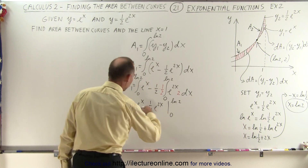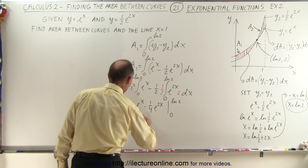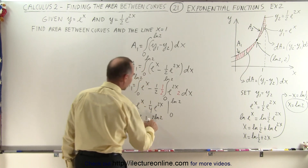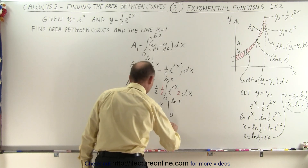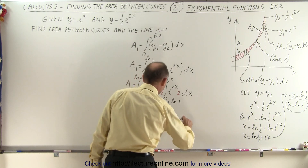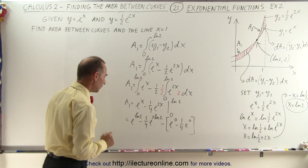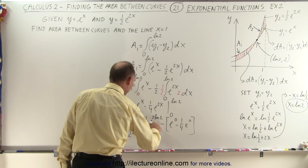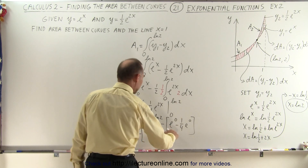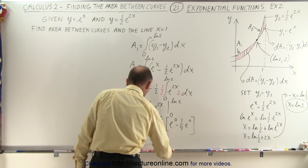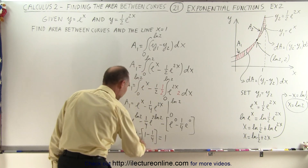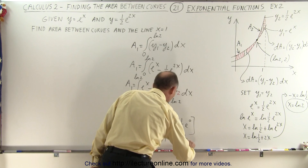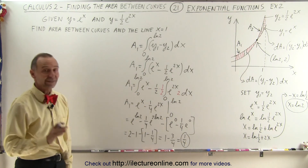Evaluating from 0 to the natural log of 2: plugging in the upper limit gives e to the natural log of 2 minus 1 quarter times e to the 2 times the natural log of 2, which is e to the natural log of 4. That simplifies to 2 minus 1 quarter times 4, which is 1. Subtracting the lower limit: e to the 0 minus 1 quarter e to the 0 equals 1 minus 1 quarter, which is 3 quarters. So A1 equals 1 minus 3 quarters equals 1 quarter.